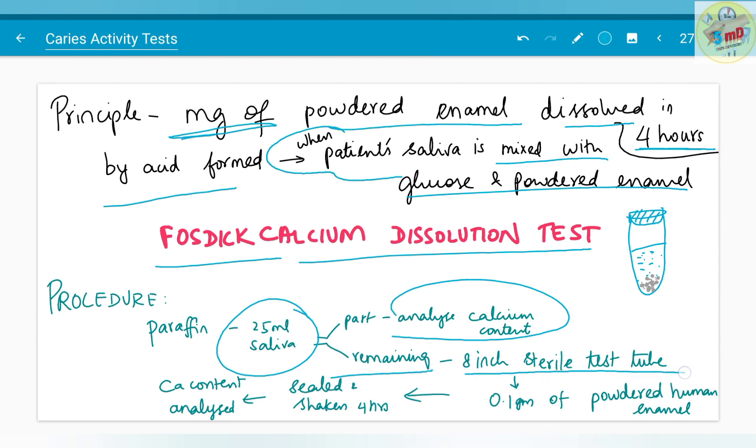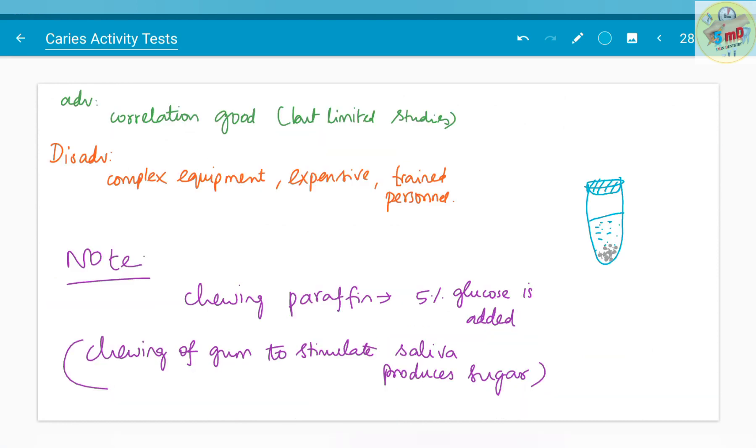The remaining part is introduced into an 8-inch sterile test tube and 0.1 gram of powdered human enamel is added. It is sealed and shaked for 4 hours. Calcium content analyzed after the 4 hours will give you the dissolution capacity of the saliva. Advantage is that correlation is good but there are very limited studies. The disadvantage is that the complex equipment and the expensive nature of the study and the need of trained personnel to carry out the study.